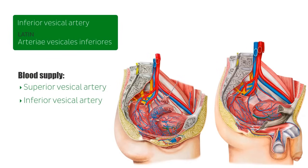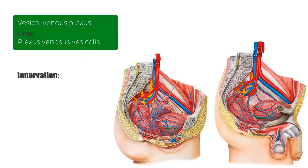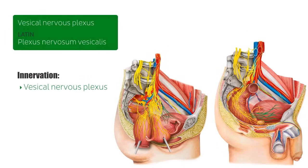Venous blood from the bladder is drained via the vesical venous plexus to the internal iliac veins. The veins covering the bladder, shown in blue in both images, are part of the vesical venous plexus. Innervation of the urinary bladder is provided by the vesical nervous plexus, highlighted in green in both images.